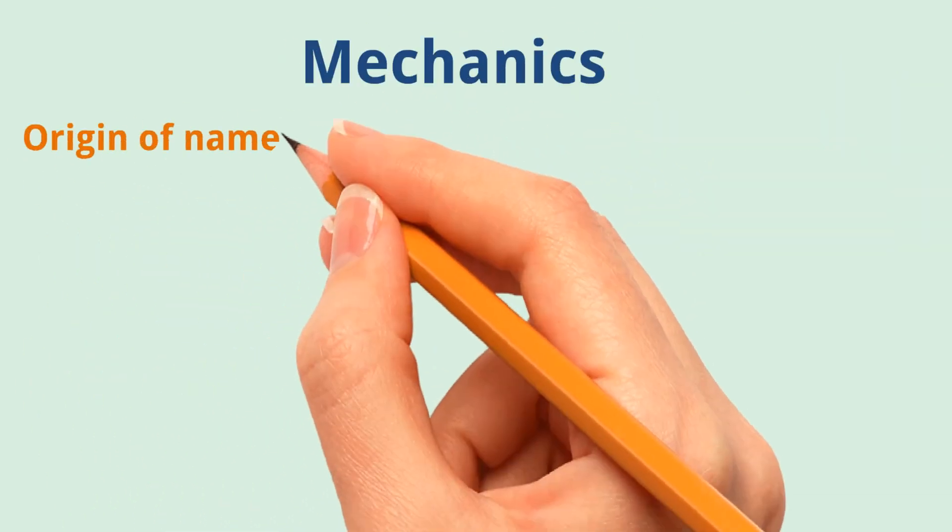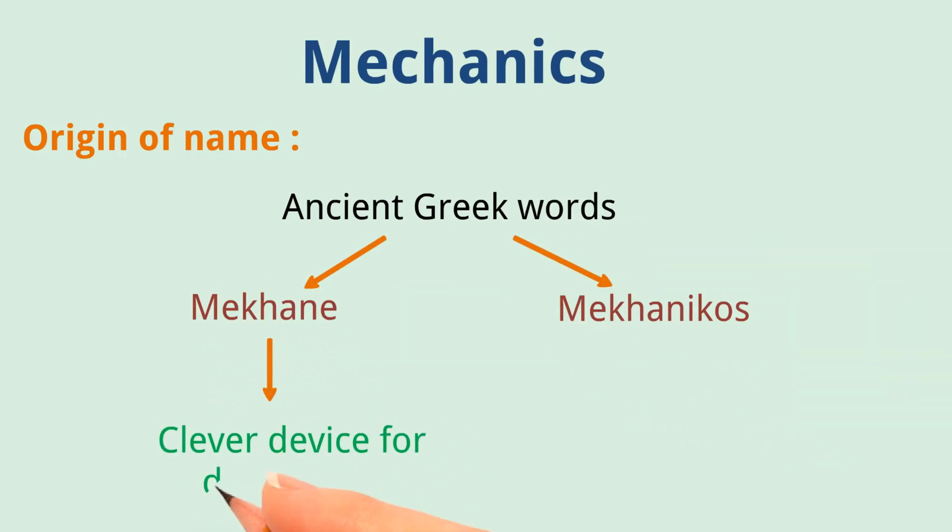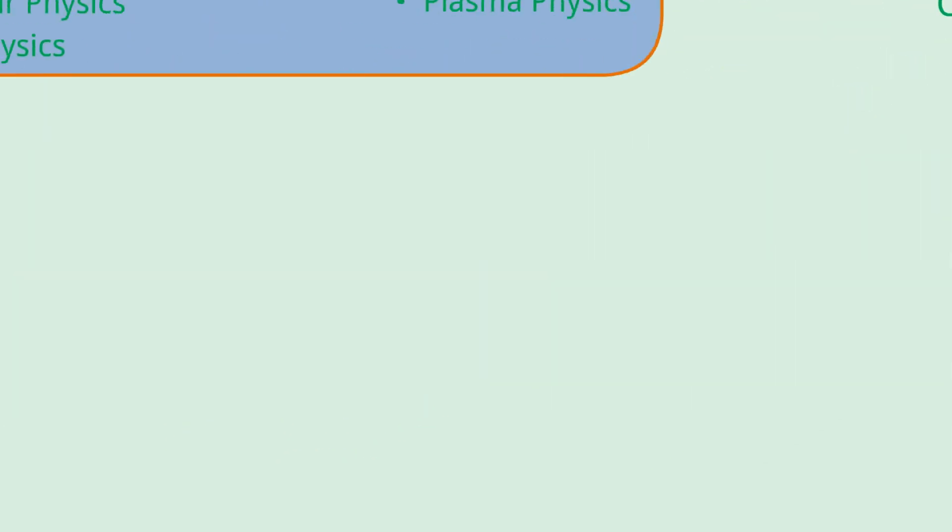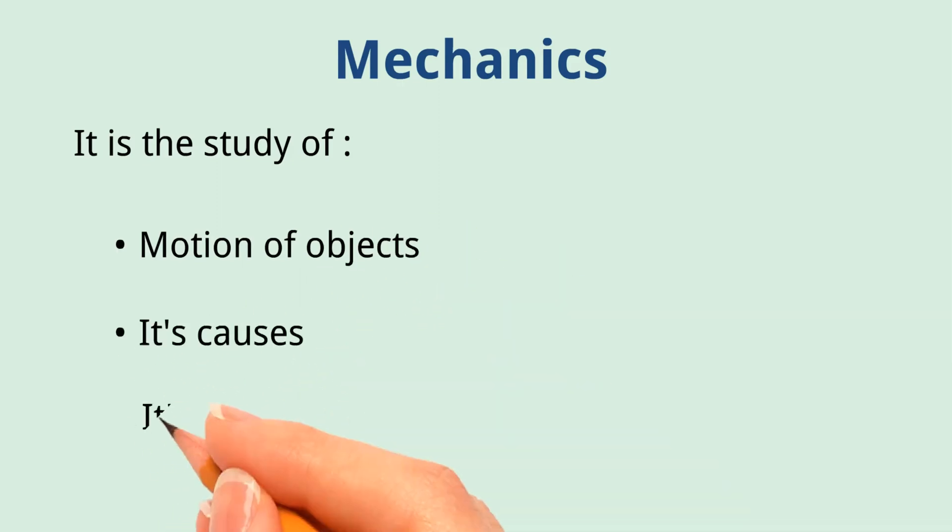Mechanics. Origin of name: The word mechanics is derived from ancient Greek words 'meccane' and 'meccanicos'. Meccane means a clever device for doing work, and meccanicos means a person skilled with machines. Mechanics is the study of motion of objects, their causes, and effects.